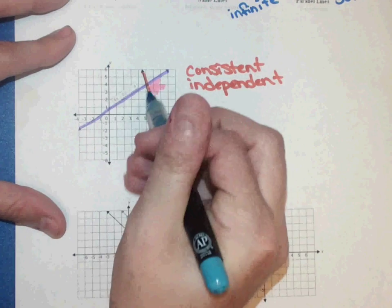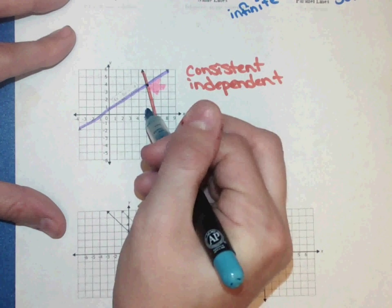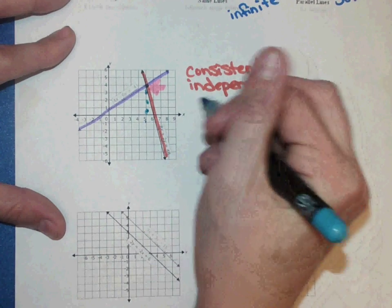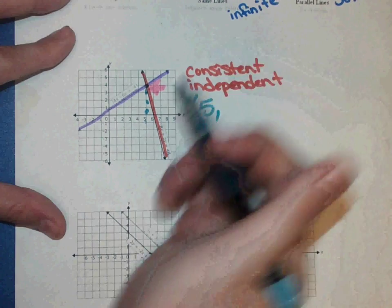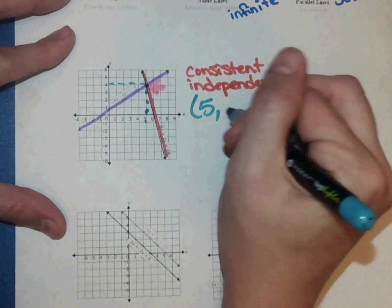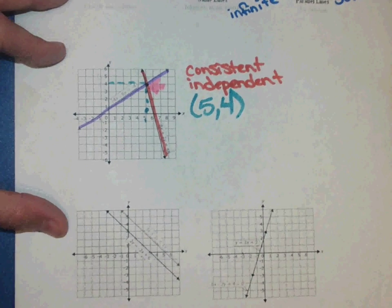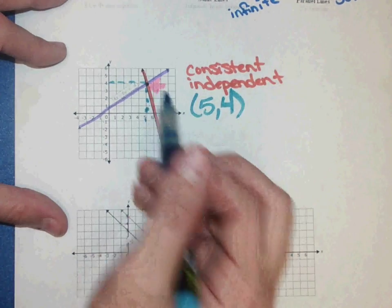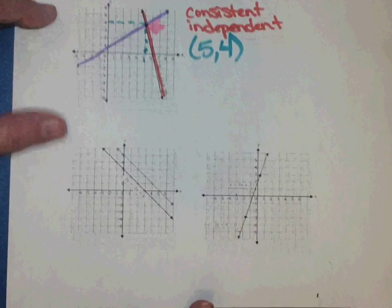Well, you always look at your x value first. So I'm going to right here, my x value is five. My y value is four. So my solution to this system would be five, four. So it's just where they cross.